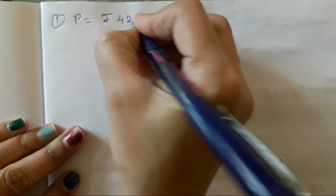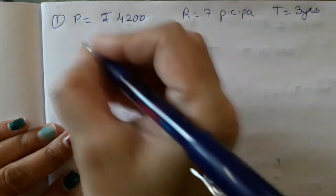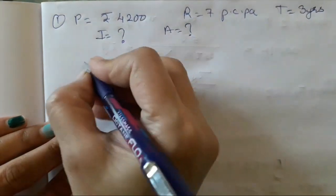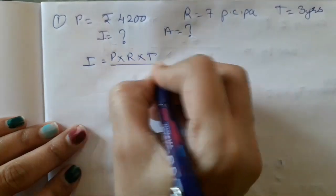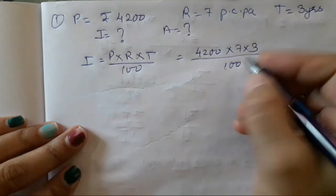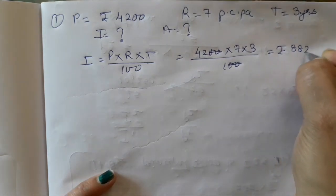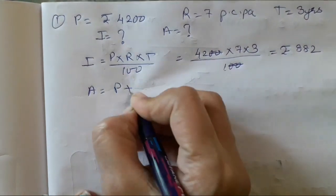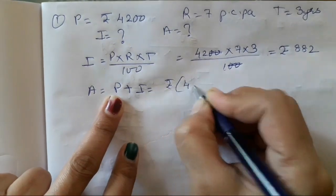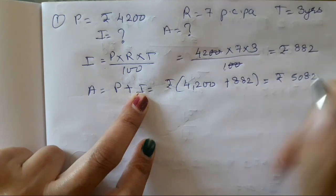Now this is question number 5 — fill in the blanks in the table. The first sum: principal is rupees 4,200, R is 7% PCPA, T is 3 years, find I and A. So I is equal to P into R into T upon 100, that is 4,200 into 7 into 3 upon 100. These two zeros get reduced, and you get rupees 882. Then A is equal to P plus I, that is 4,200 plus 882 equals 5,082.